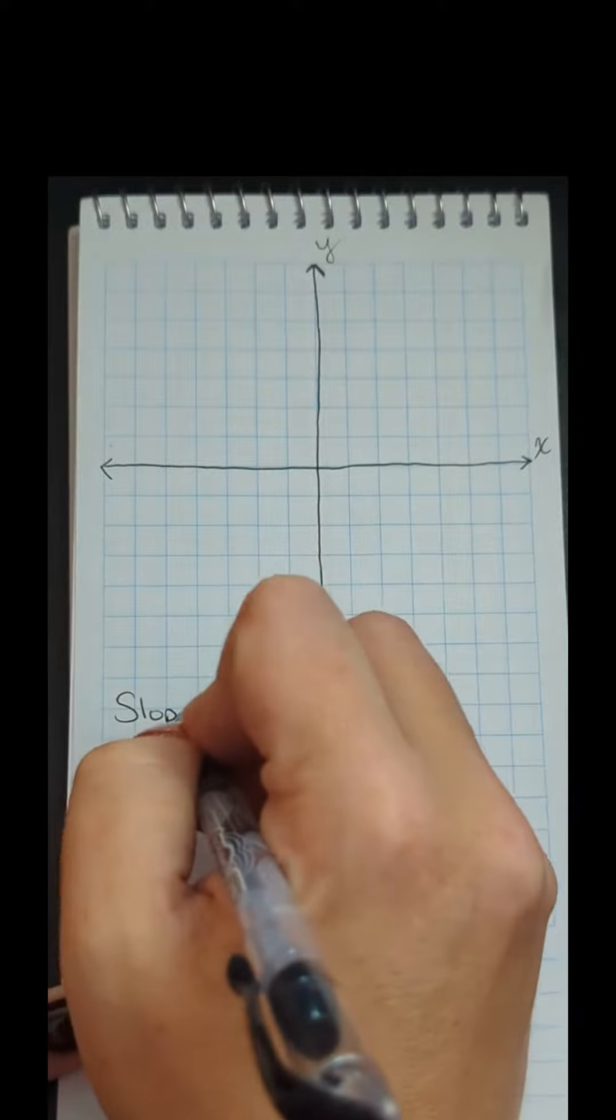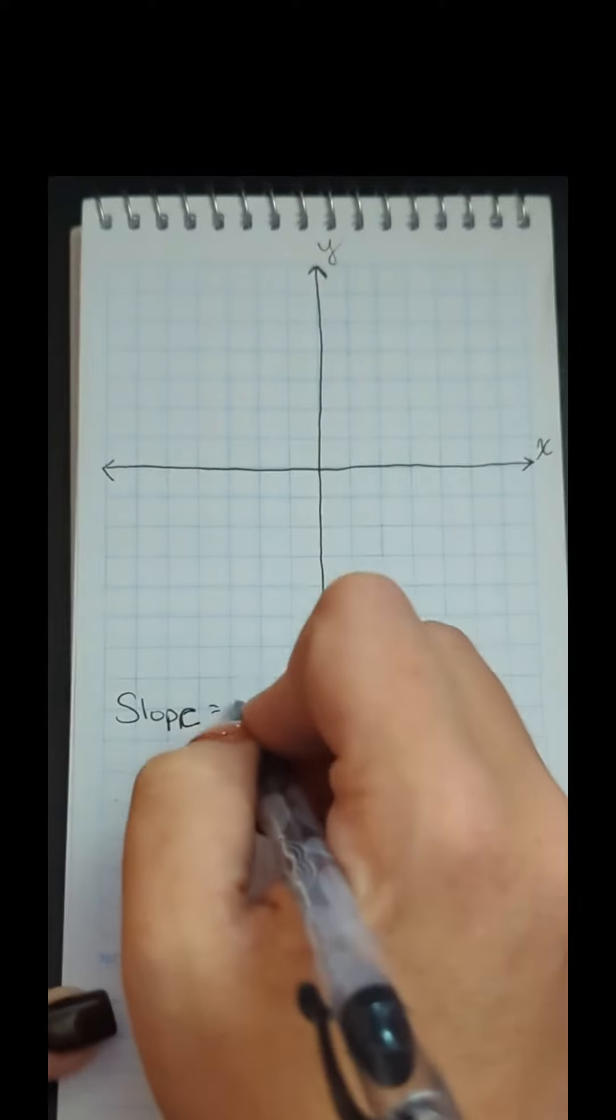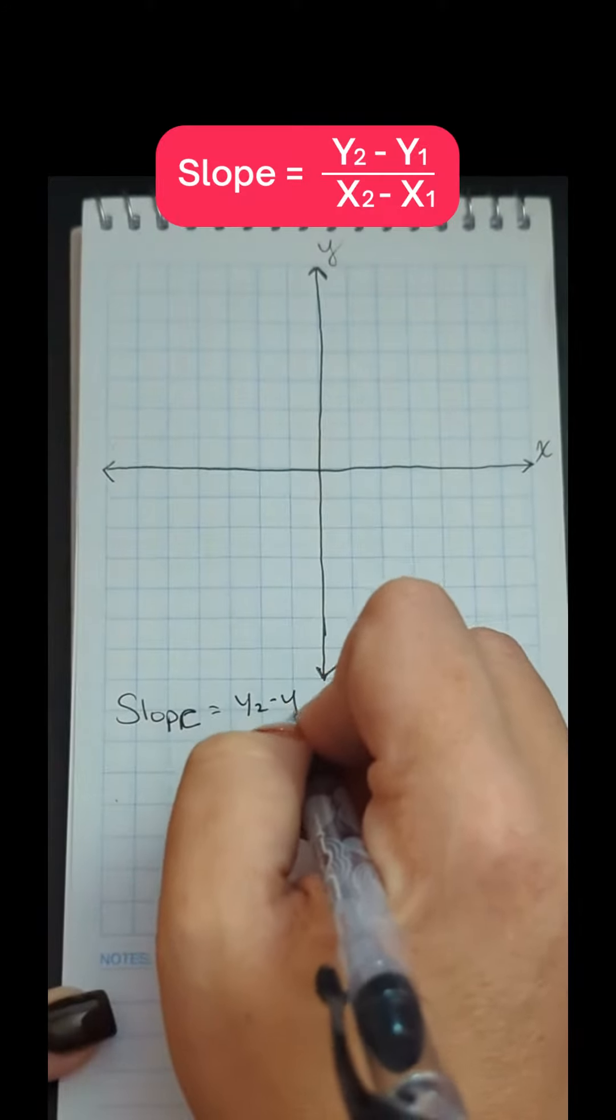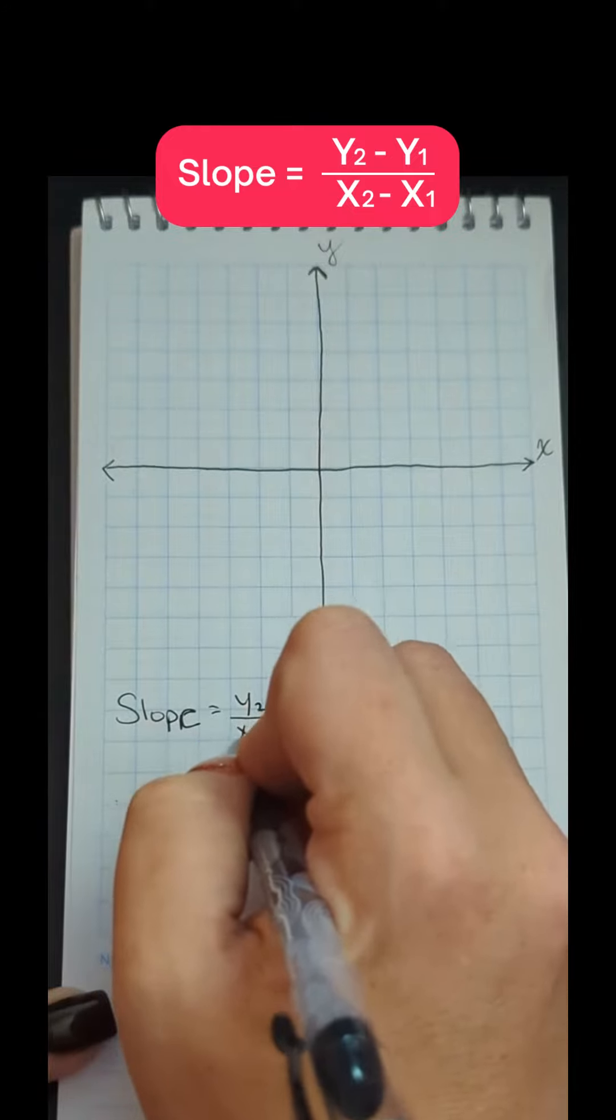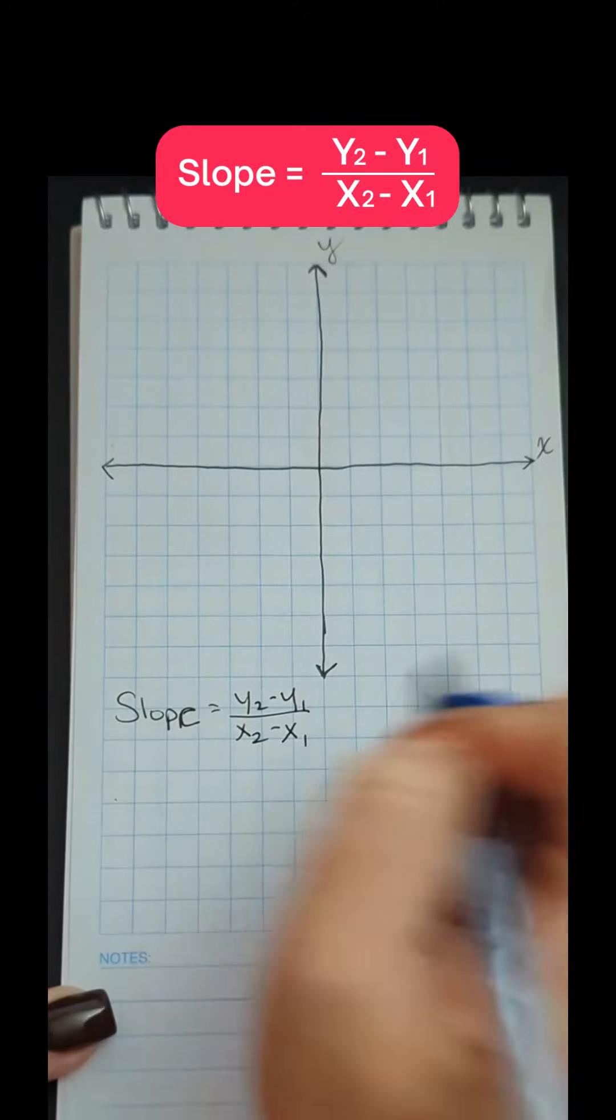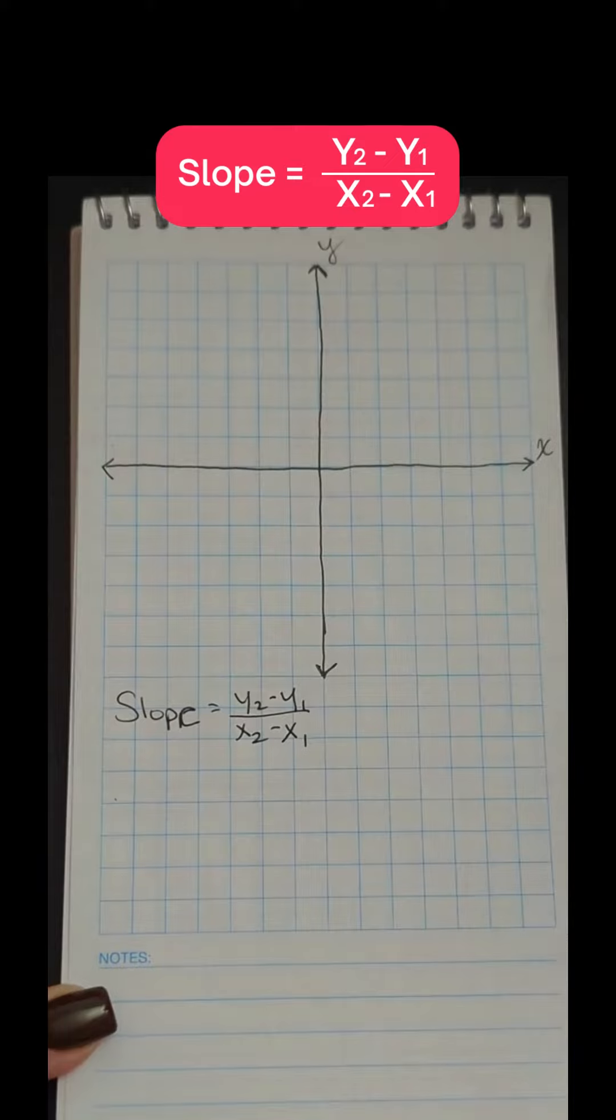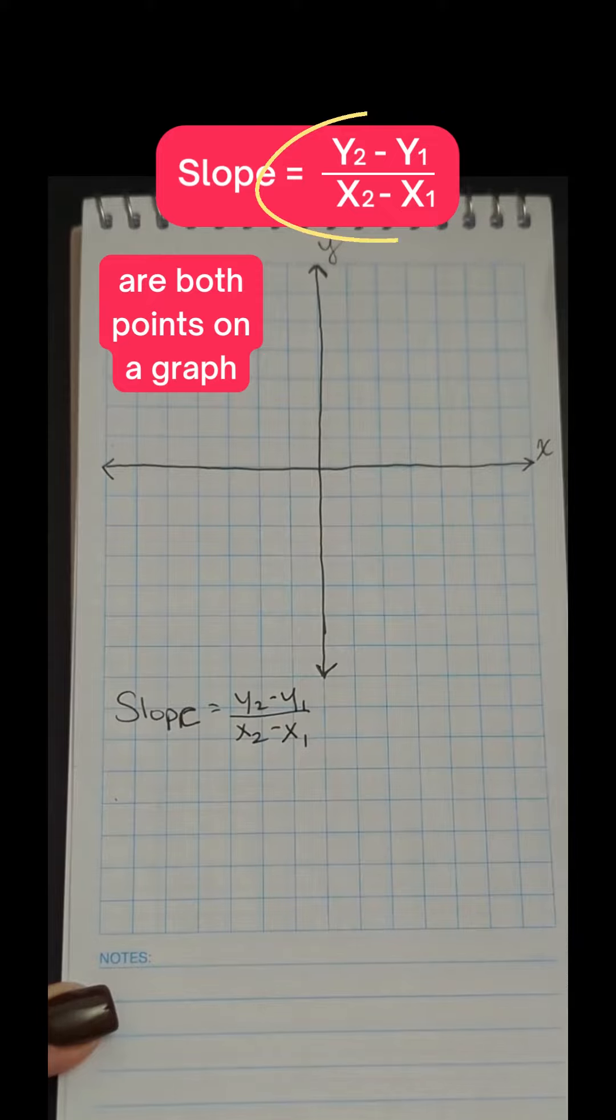Slope can be calculated using an equation y2 minus y1 over x2 minus x1, that equals slope, where x1 y1 and x2 y2 are both points on a graph.